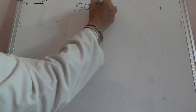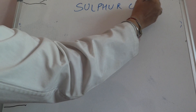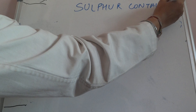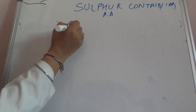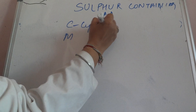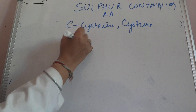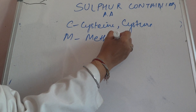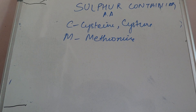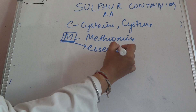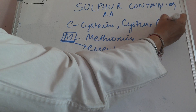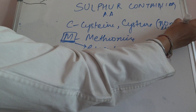Hi everybody. Today we discuss sulfur-containing amino acids. There are three sulfur-containing amino acids: cysteine, cystine, and methionine. Out of these, methionine is an essential amino acid, and cysteine and cystine are non-essential amino acids.